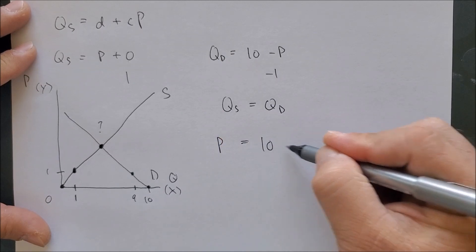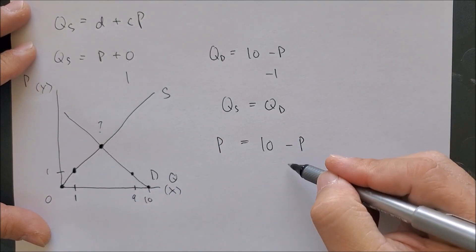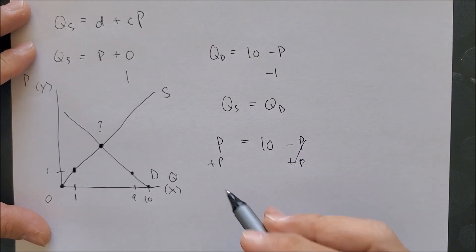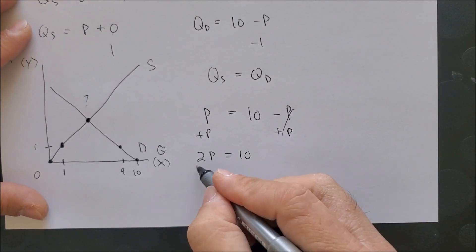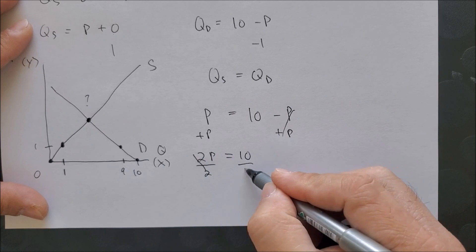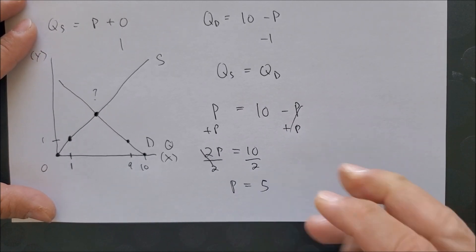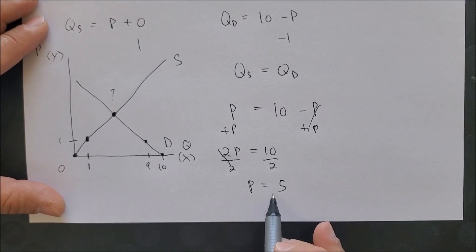We have 2P equals 10. Divide 2 on each side. Price is 5. P on the y-axis is 5.